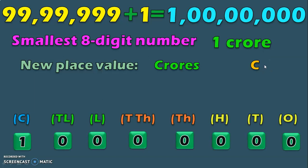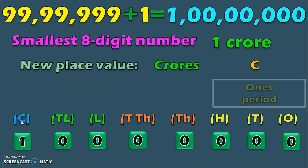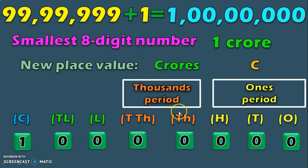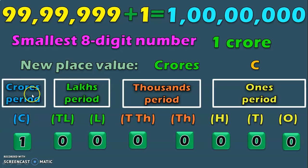Let us put this crore number in a place value chart. We have a 0 in the ones place, tens place, hundreds place, thousands place, ten thousands place, lakhs place, ten lakhs place, and finally a 1 in the new place value — crore. For the usage of periods: a comma after ones, tens and hundreds place forms the ones period; a comma after thousands and ten thousands place forms the thousands period; a comma after lakhs and ten lakhs place forms the lakhs period; and there is one more new period called the crores period.